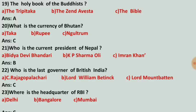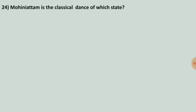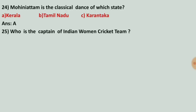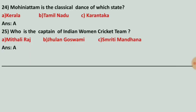Where is the headquarters of the Reserve Bank of India? Options are Delhi, Bangalore, and Mumbai. The correct answer is number C, Mumbai — the RBI headquarters is in Mumbai. Mohiniattam is the classical dance of which state? Options are Kerala, Tamil Nadu, and Karnataka. The correct answer is Kerala. Who is the captain of the Indian women's cricket team? Options are Mithali Raj, Jhulan Goswami, and Smriti Mandhana. The correct answer is number A, Mithali Raj.